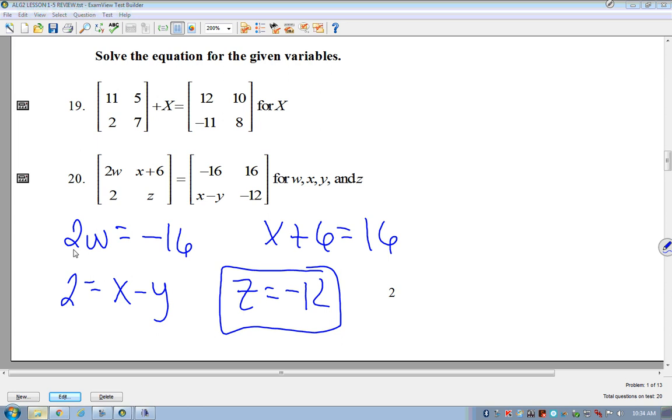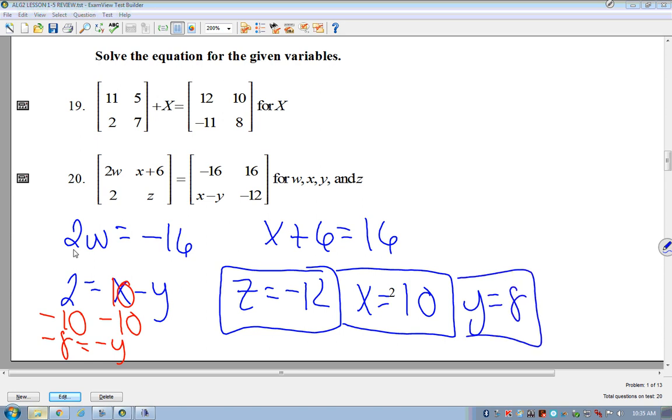All right. So for the rest of it, I'm going to start back over here at x, okay? Because I can solve for that pretty easily, correct? Subtract 6, right? So x equals what? 10. Okay. X equals 10. Now, what I can do is I can come back in here and substitute in 10, right? So 10 minus y equals 2. I could subtract 10, right? That's going to give me negative 8 equals negative y. So y equals what? Y equals 8, right? And 2w equals negative 16. That's just simply divide by 2, right? What does w equal? W equals negative 8.